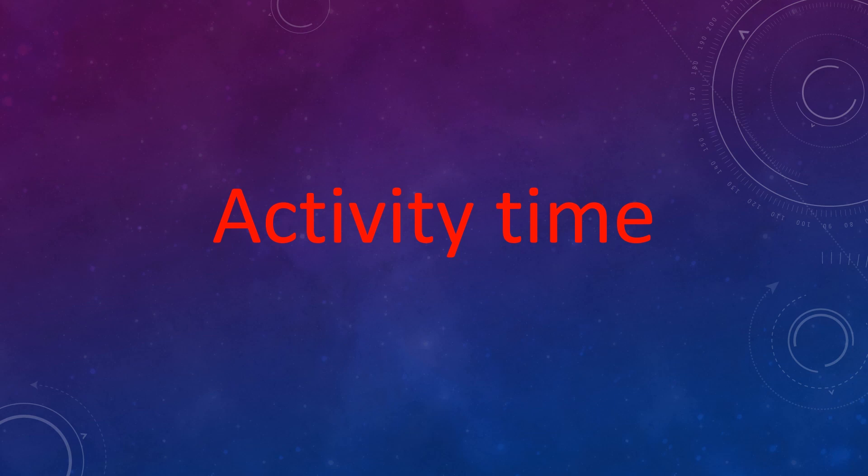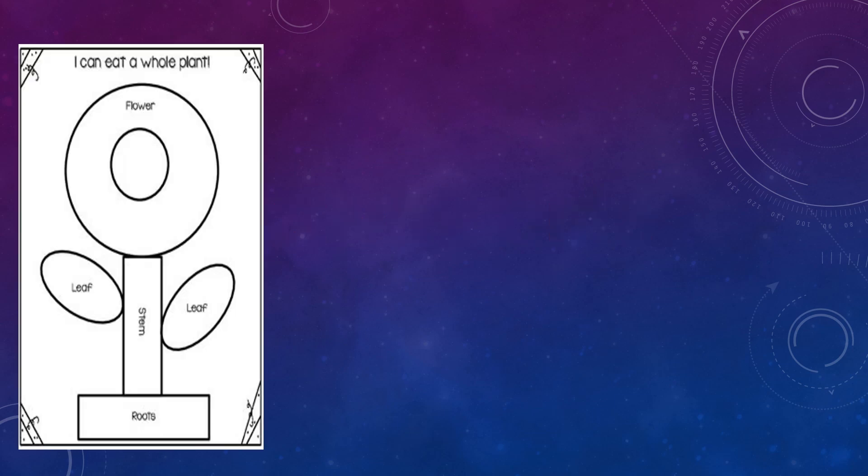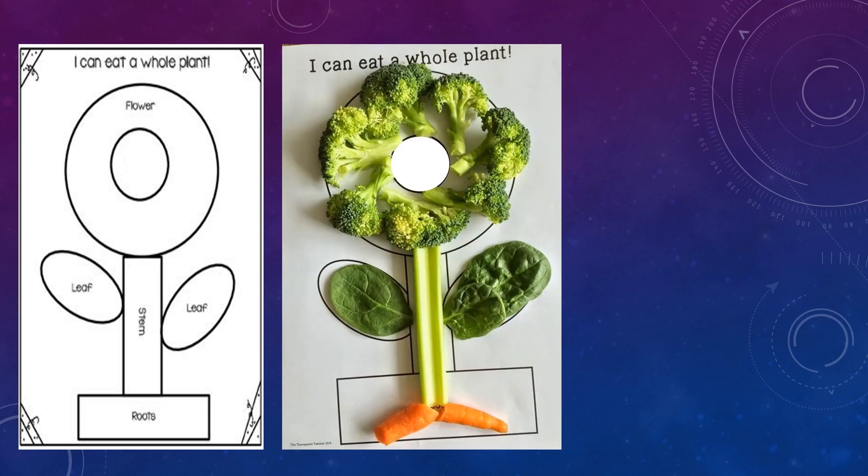In activity time, you'll have to take an A4 size paper and write 'I can eat a whole plant.' You can see a black and white picture with circles labeled flower, stem, oval-shaped leaves, and roots at the base. For example, carrots are the root, as we just learned, so carrot will go in the root part.